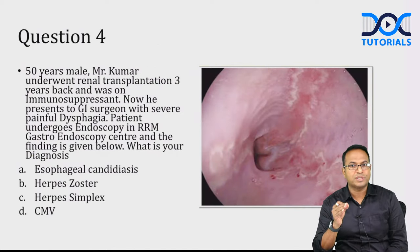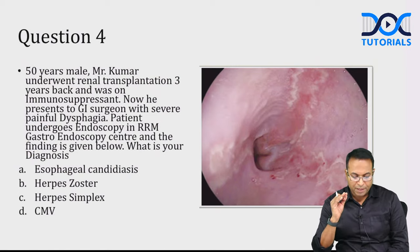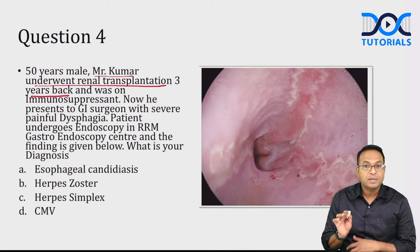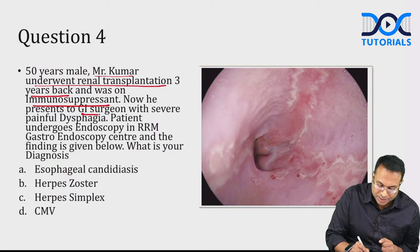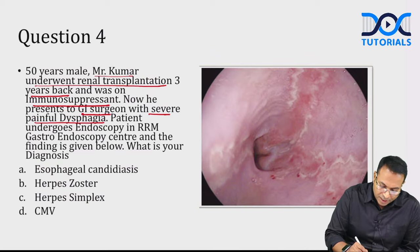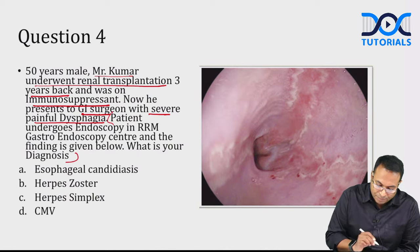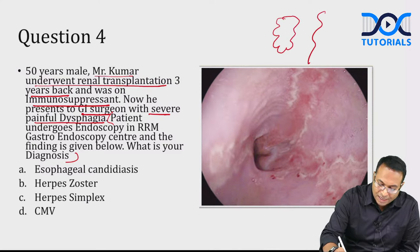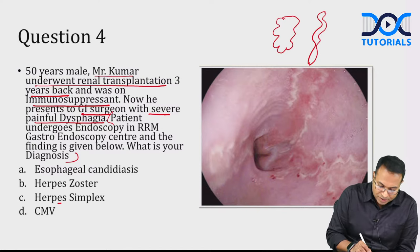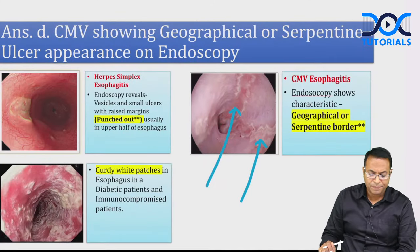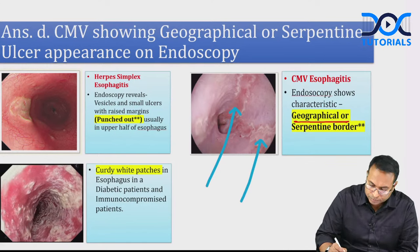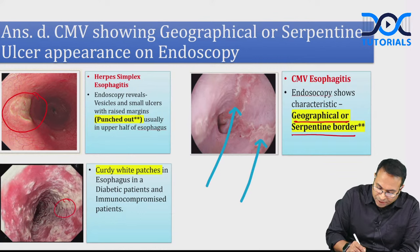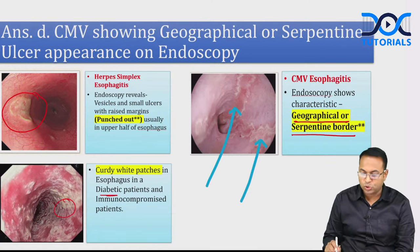Next are image-based endoscopy and colonoscopy questions. 50-year-old Mr. Kumar underwent renal transplantation 3 years back and is on immunosuppression. He presented with severe painful dysphagia. Endoscopy shows a classical geographical ulcer, also known as serpentine ulcer, which is seen in cytomegalovirus infection. Herpes simplex shows punched-out ulcers; esophageal candidiasis shows curd-white patches, typically in diabetic patients.